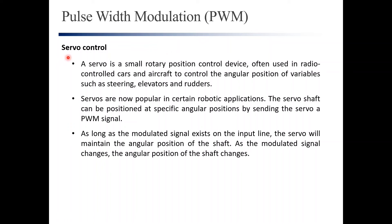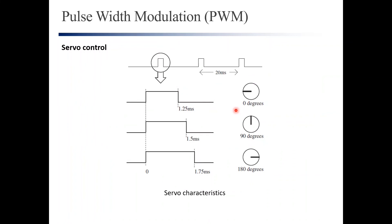Next we look at another application: controlling the position of a servo motor. A servo is a small rotary position control device often used in radio-controlled cars and aircraft to control angular position of variables such as steering, elevators, and rudders. The position is controlled by the duty cycle: 0° requires a duty cycle of 1.25 ms, 90° requires 1.5 ms, and 180° requires 1.75 ms. The period for this servo motor must be 20 milliseconds.